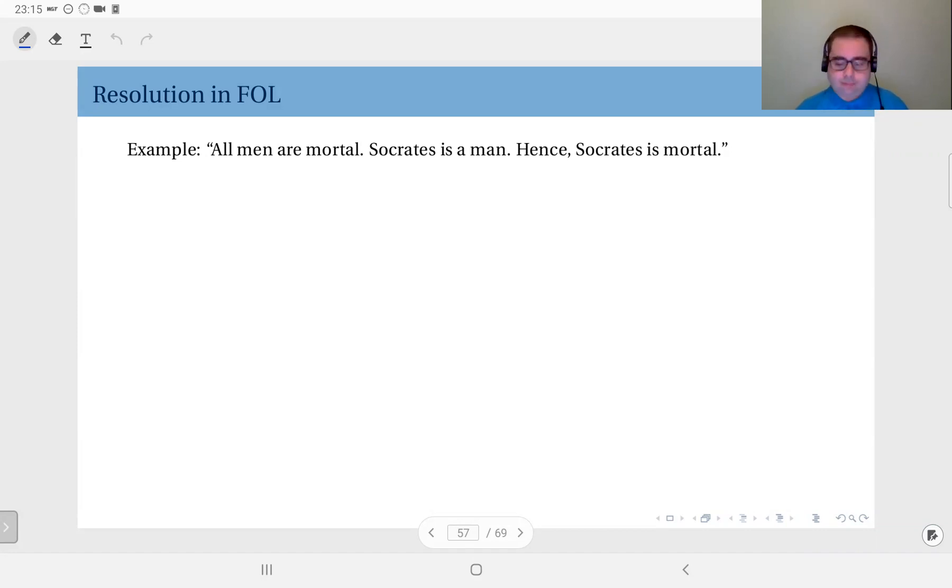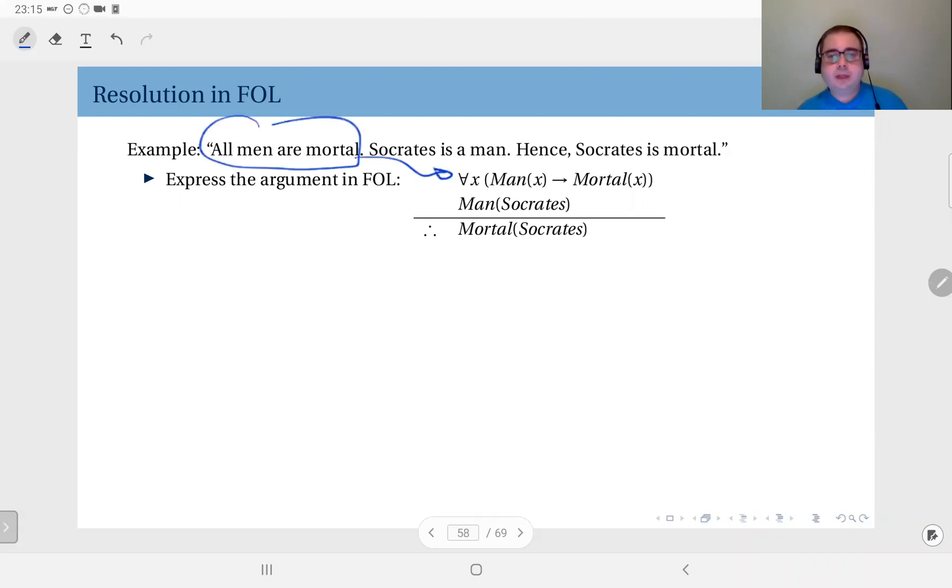First of all, we have to express this in first-order logic. What this says is: for all x, Man(x) implies Mortal(x). If x is a man, then this implies x is mortal. This represents the first premise. The second one says Socrates is a man, therefore Man(Socrates). You see, x is a variable here and Socrates is a value in my domain, which is essentially the set of people. The conclusion is Socrates is mortal: Mortal(Socrates). We would like to show